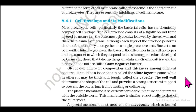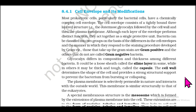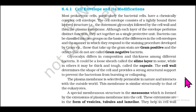Section 8.4.1: Cell Envelope and Its Modifications. Most prokaryotic cells, particularly bacterial cells, have a chemically complex cell envelope consisting of a tightly bound three-layer structure: the outermost glycocalyx, followed by the cell wall, and then the plasma membrane. Bacteria can be classified into two groups based on differences in cell envelopes and how they respond to Gram staining — those that take up the Gram stain are Gram-positive, and others that do not are Gram-negative bacteria.